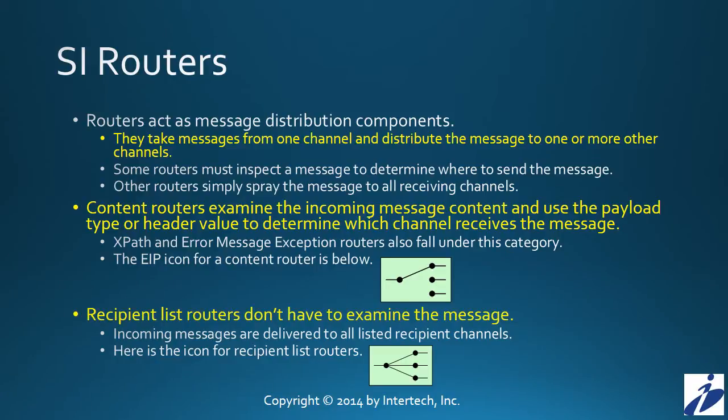Recipient list routers, on the other hand, don't look at the message. They simply take the inbound message and pass it on to all of the outbound channels that are in a recipient list provided to the router.